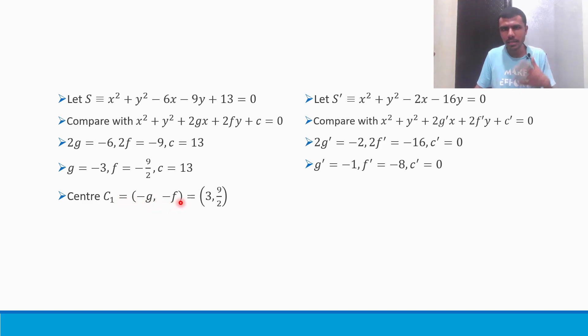Now, find out g, f, c. So 2g is minus 6, so g will be minus 3. f will be minus 9 by 2. c is 13. And here, 2g dash is minus 2, so g dash is minus 1. And f dash is minus 8. c dash is 0. Now what is center? Center is minus g, minus f. Center C1 is minus of minus 3 is plus 3, and minus of minus 9 by 2 is plus 9 by 2. Here, center C2 is 1 comma 8.